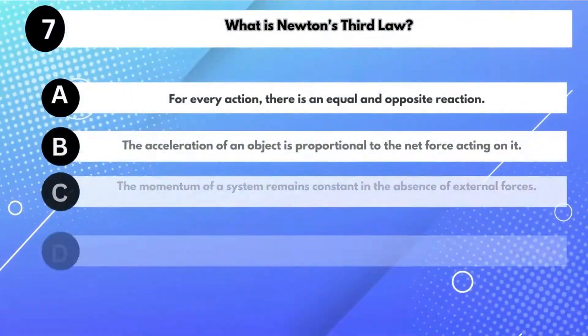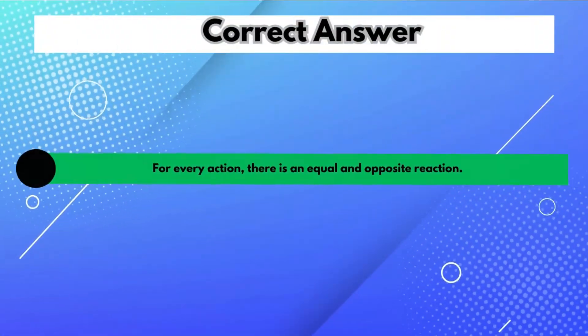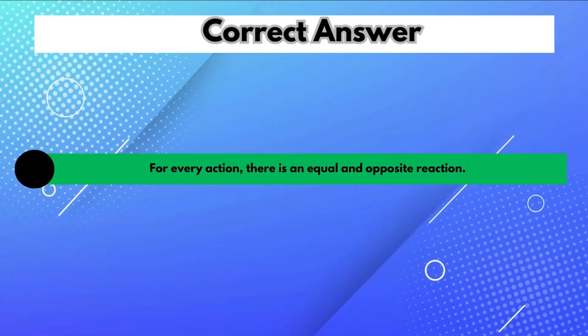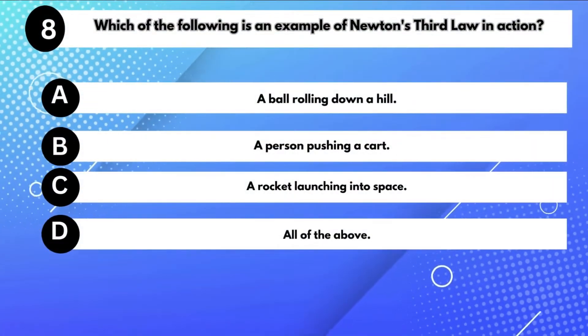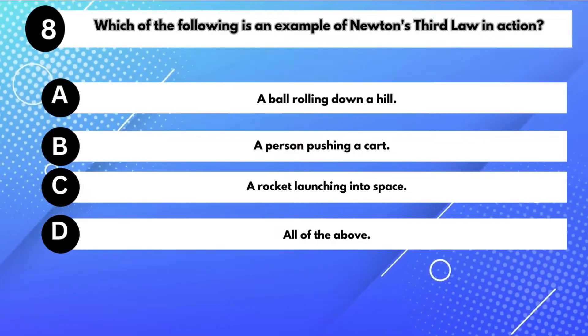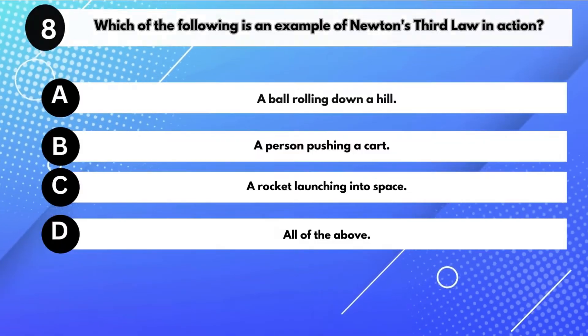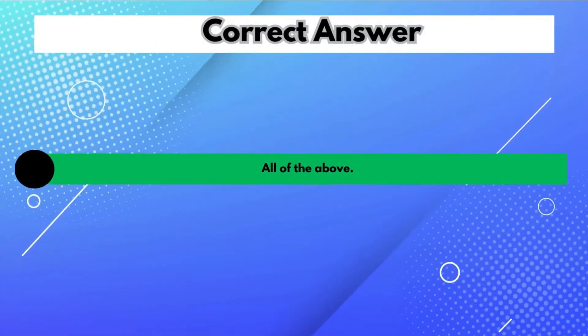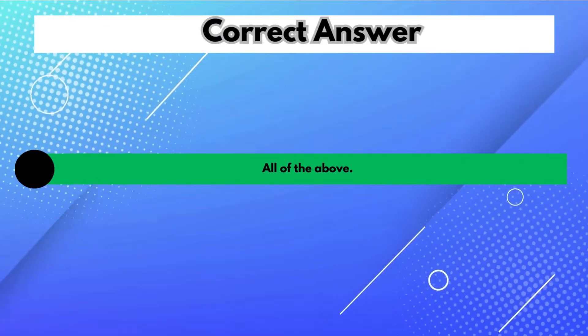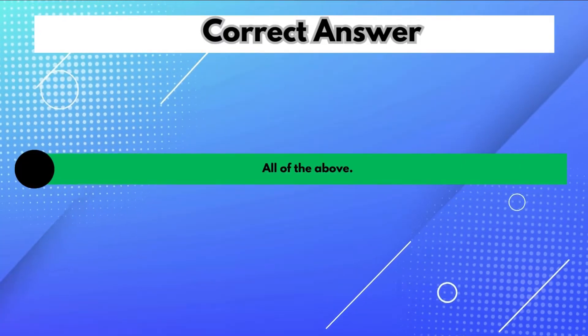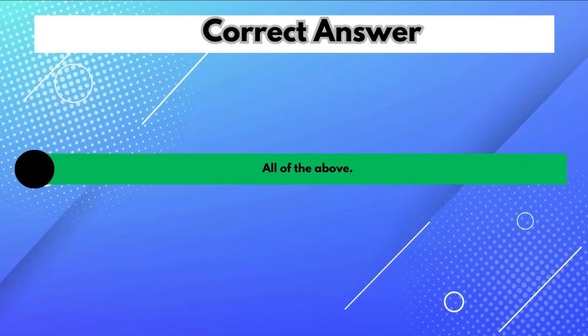What is Newton's third law? Answer A: For every action, there is an equal and opposite reaction. Which of the following is an example of Newton's third law in action? Answer D: All of the above — a ball rolling down a hill, a person pushing a cart, a rocket launching into space.